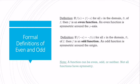To summarize: a function is even if f of x equals f of negative x, and a function is odd if f of negative x equals negative f of x. Importantly, not all functions have to be even or odd — some can be neither, meaning they have no symmetry about the y-axis or the origin.